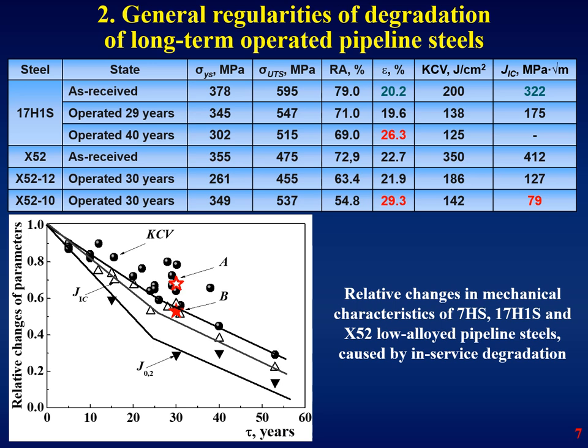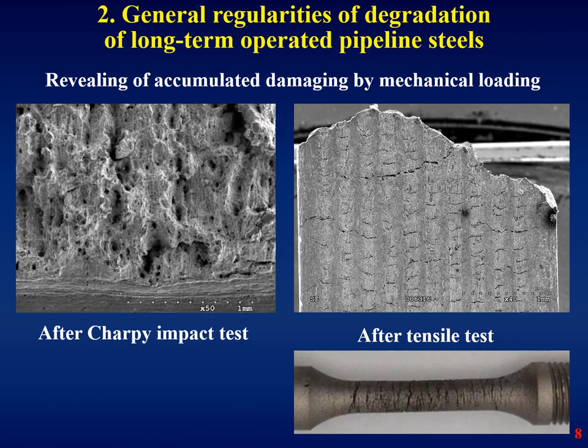Regarding the characteristics of the system, special attention should be paid to elongation. The problem is the following: long-term service causes development of micro-damage, and elongation is sensitive to cracking during specimen tension. Then elongation will summarize really plastic deformation and multi-crack opening, which will at least diminish elongation or even increase it. On this slide you can see that steel operated for the latest 30 years is characterized by a lower level of fracture toughness but the highest level of elongation. As confirmation, you can see examples revealing damage accumulation by mechanical loading — on the left, the fracture surface of exploited steel after an impact test, and on the right, the surface of a specimen after a tension test.